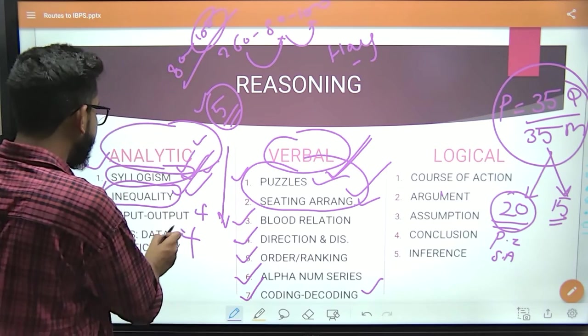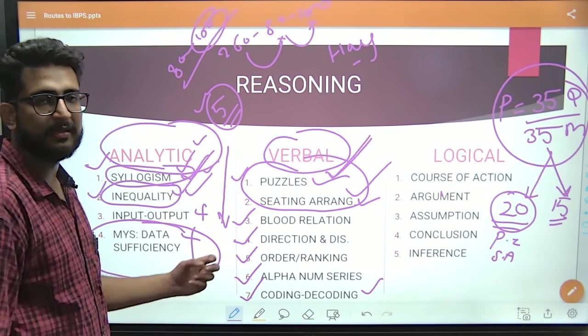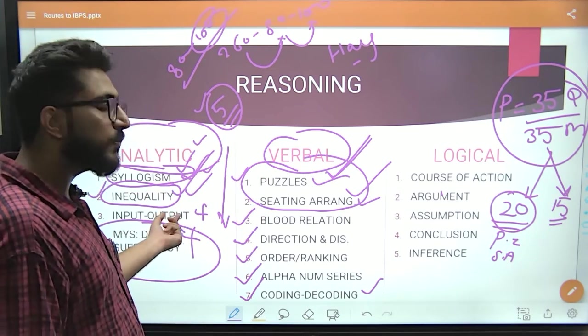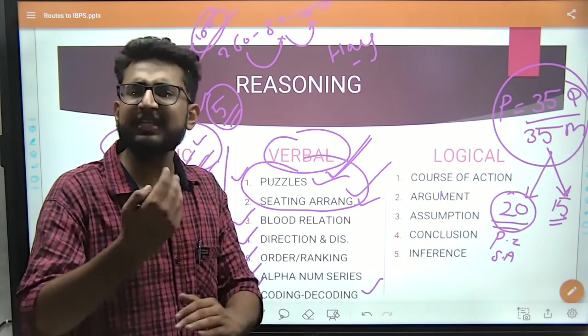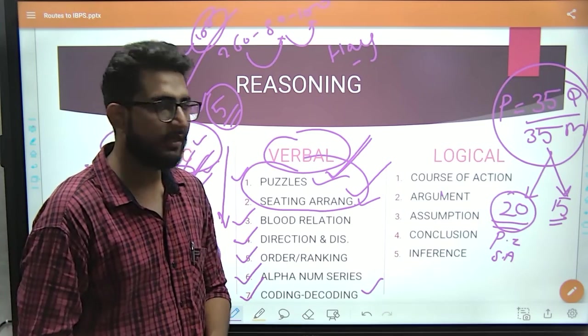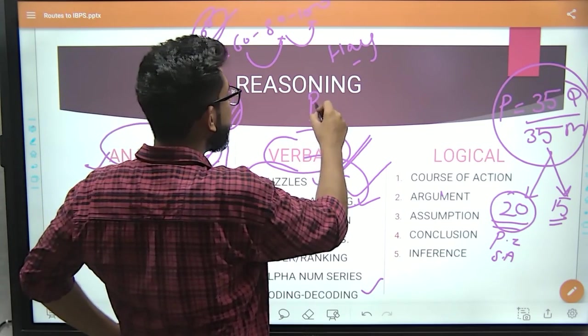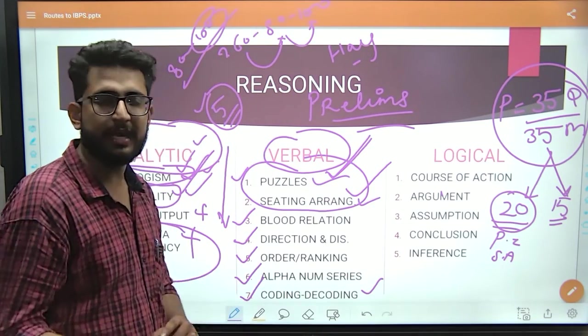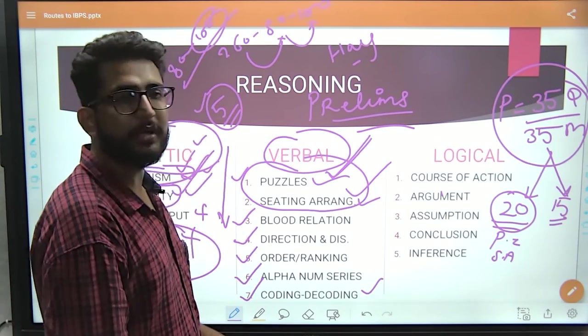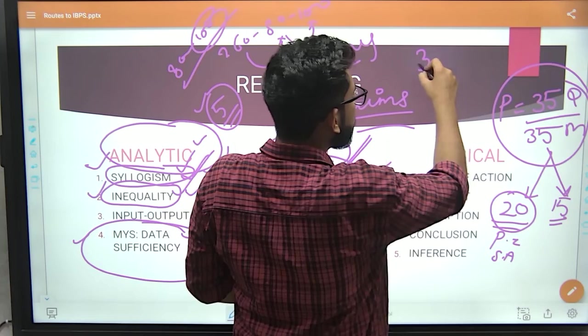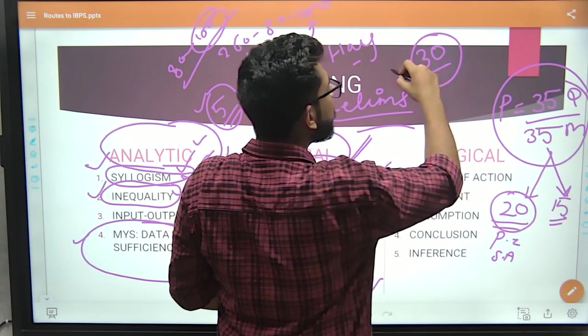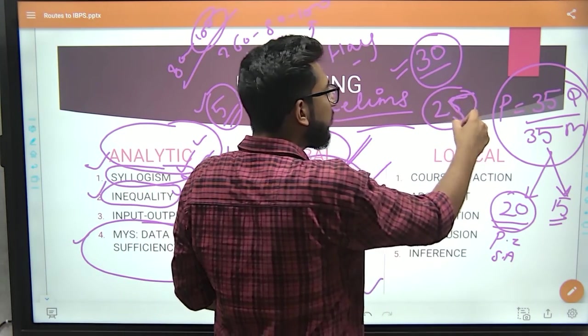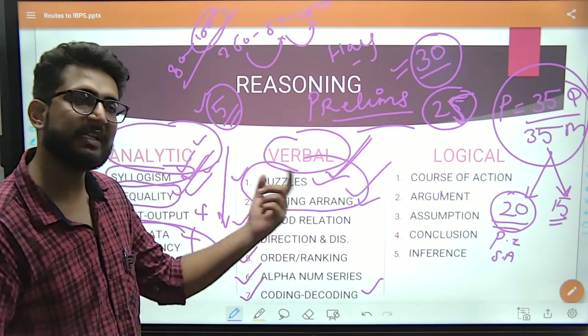Now we have to cover machine input output, logical reasoning and data sufficiency. So data sufficiency, there is no need to prepare separately. Once you prepare all these chapters, practice data sufficiency. Now logical reasoning and machine input output is actually mains level questions, mains level topic. So on the first note, for prelims you prepare just these topics. You prepare these topics and keep writing mocks. After every chapter write one mock, see how much your score is going.